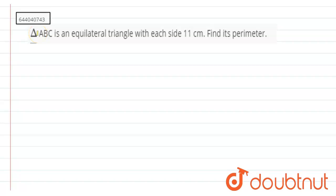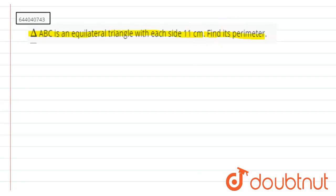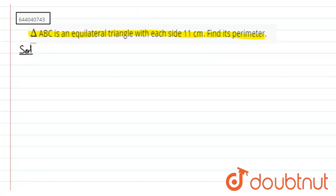Hello. Triangle ABC is an equilateral triangle with each side 11 centimeters. Find its perimeter. So in this question we have to find the perimeter of an equilateral triangle. So we will draw the equilateral triangle first.